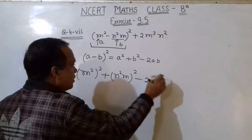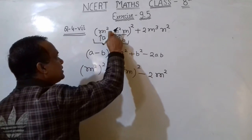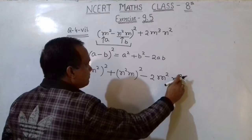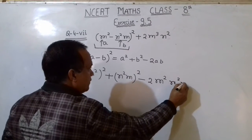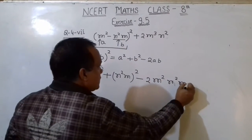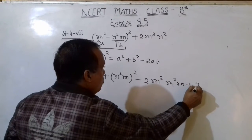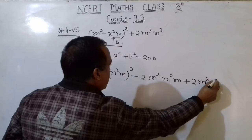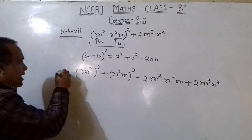And at the place of B, N²M, plus 2M³N². We solve this step.